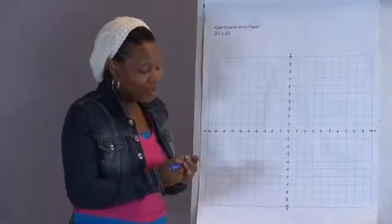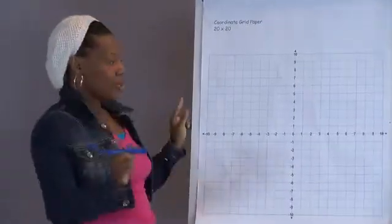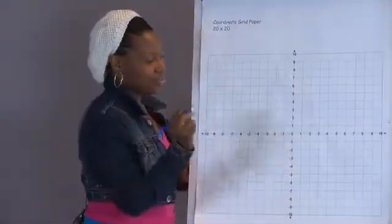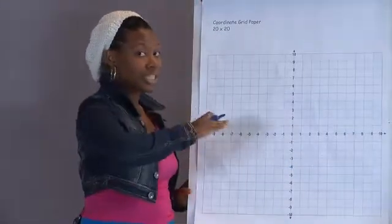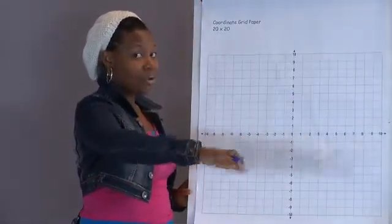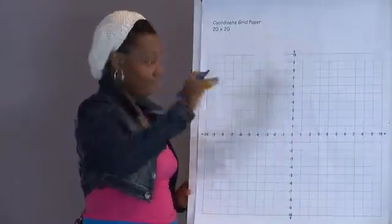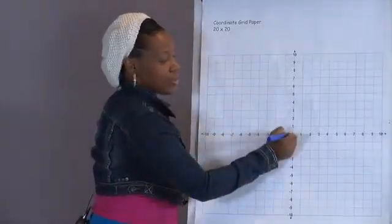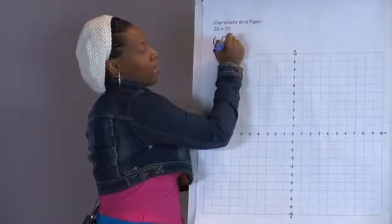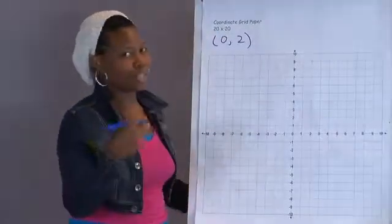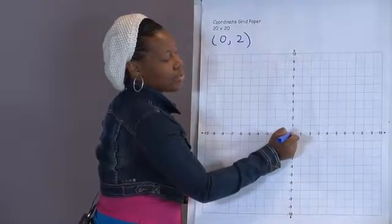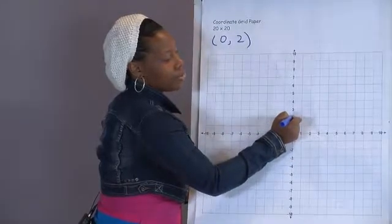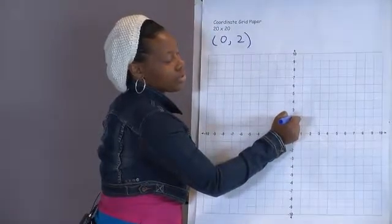Quick review. If we're graphing coordinates, and my first coordinate point is (0, 2), I want to start at the origin. Remember, the first number is left, right. Second number, up or down. I want to start at 0. This is my first ordered pair. And I'm going back and forth saying ordered pair coordinate is (0, 2). Start at 0. I'm going to go up 2 and pop my point.